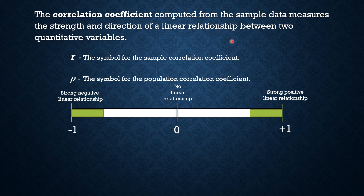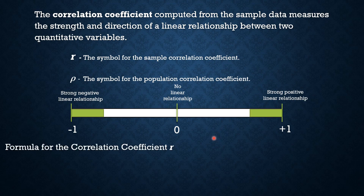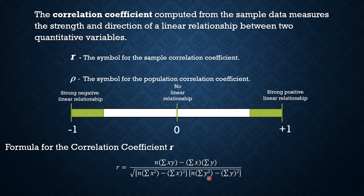There are several methods to compute the correlation coefficient, and one of the methods is to use this formula, where n is the number of data pairs. To fully understand the meaning of the correlation coefficient r and the process on how to compute it, let's take a look at the next slide.